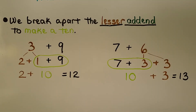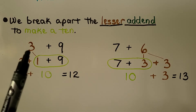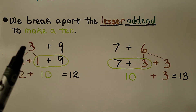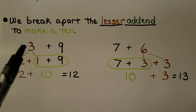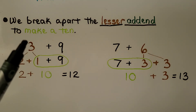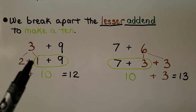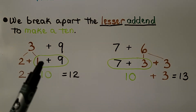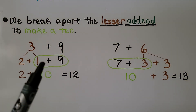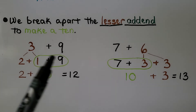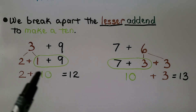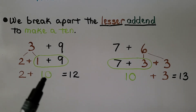We break apart the lesser add-end to make a 10. Here we have 3 plus 9. Now the lesser add-end is over here. We can break apart the 3 into a 2 plus 1, because 9 needs 1 to become a 10. Now we have 10 plus 2. It's equal to 12.